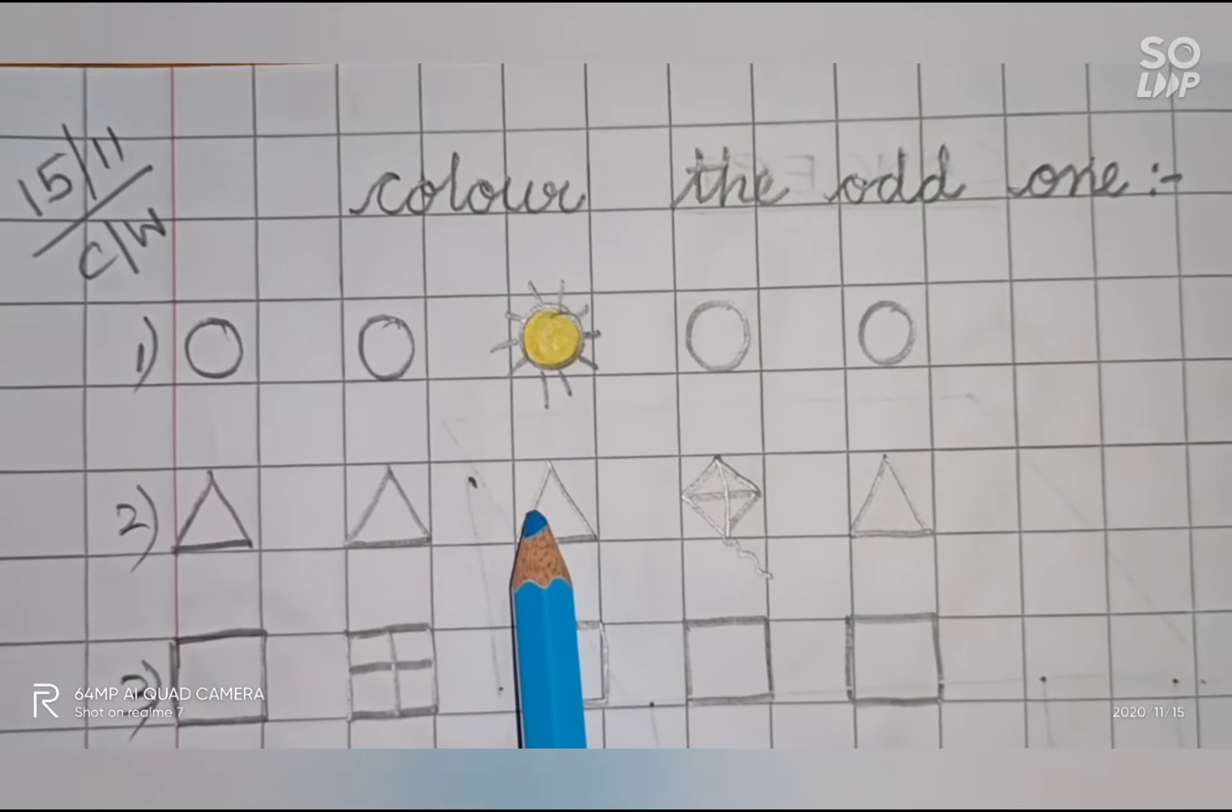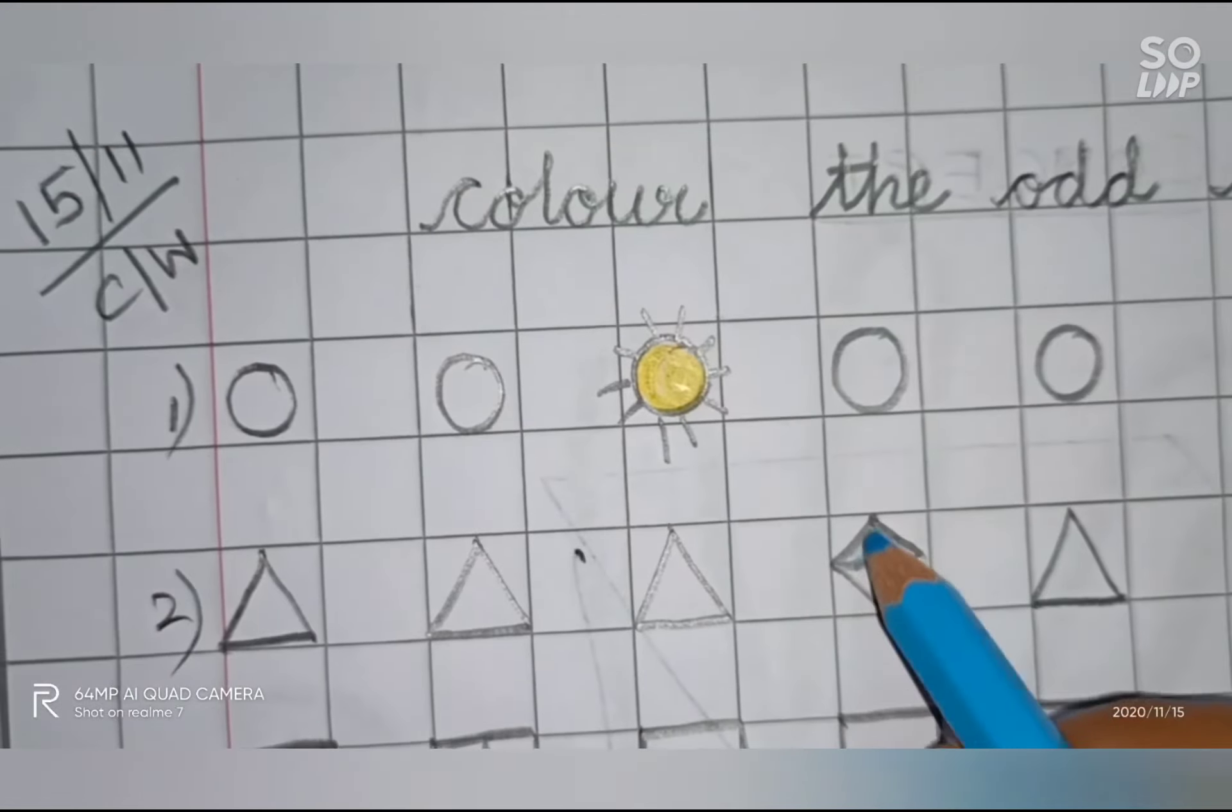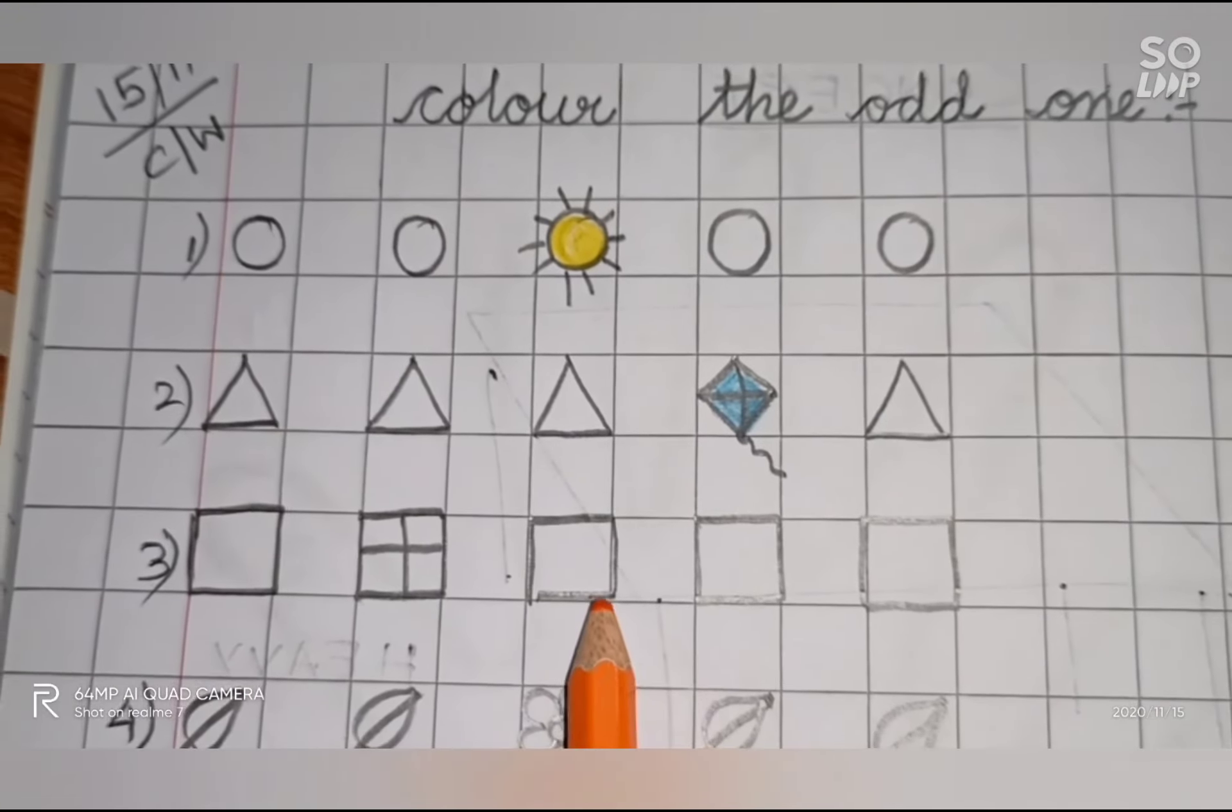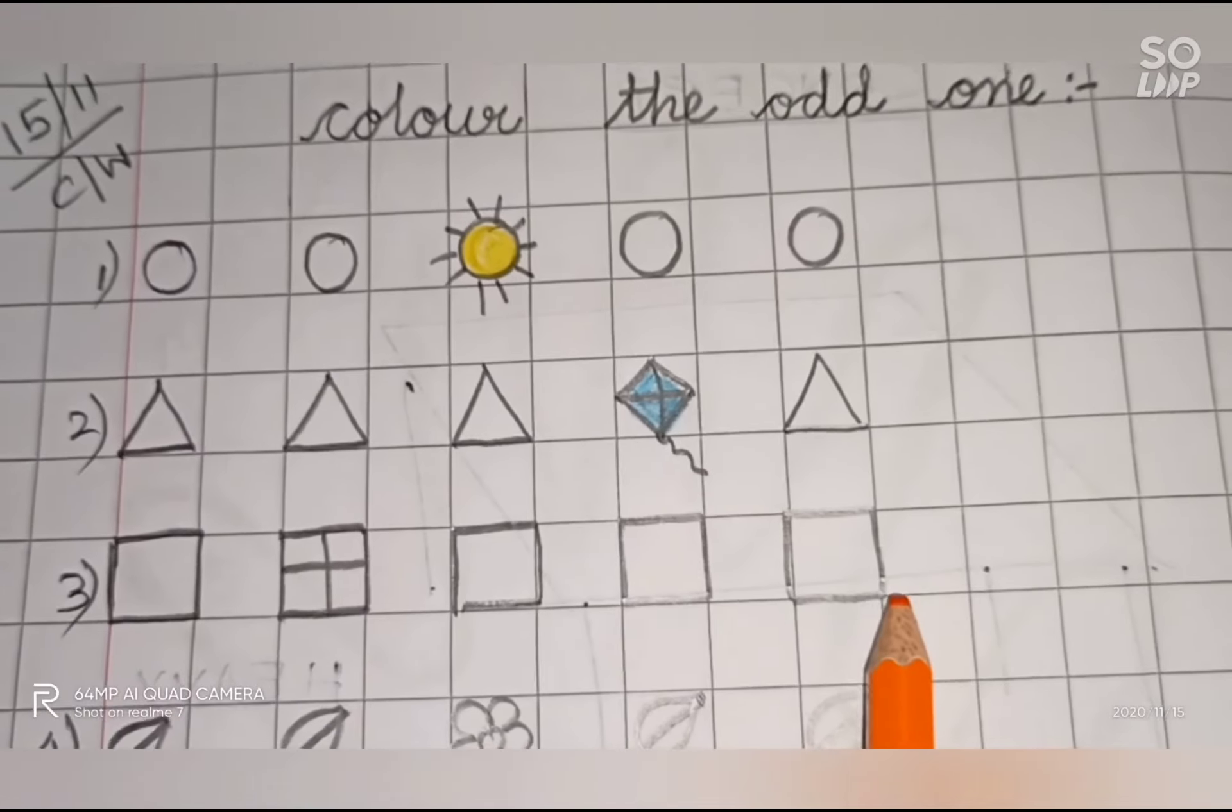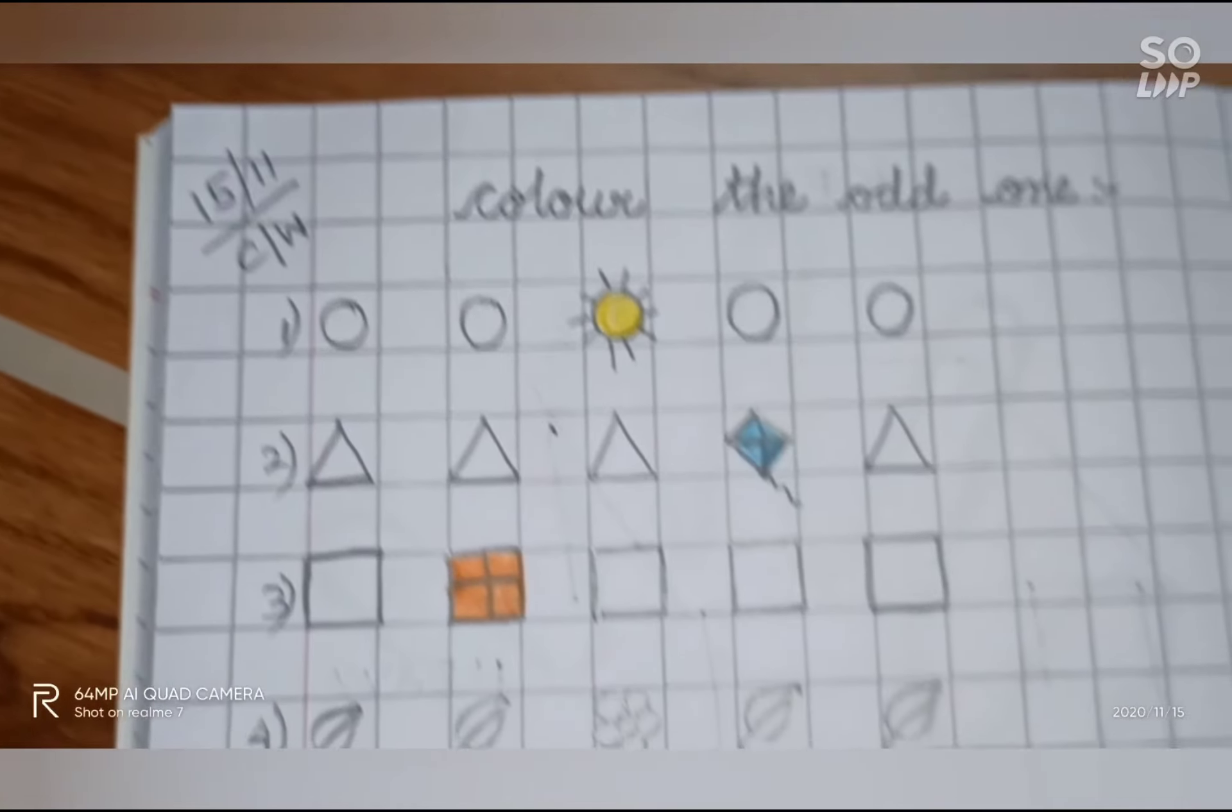These are all triangles, but here this is a kite. So we are going to color the kite. Similarly, these are all squares. See, but this is a square window.